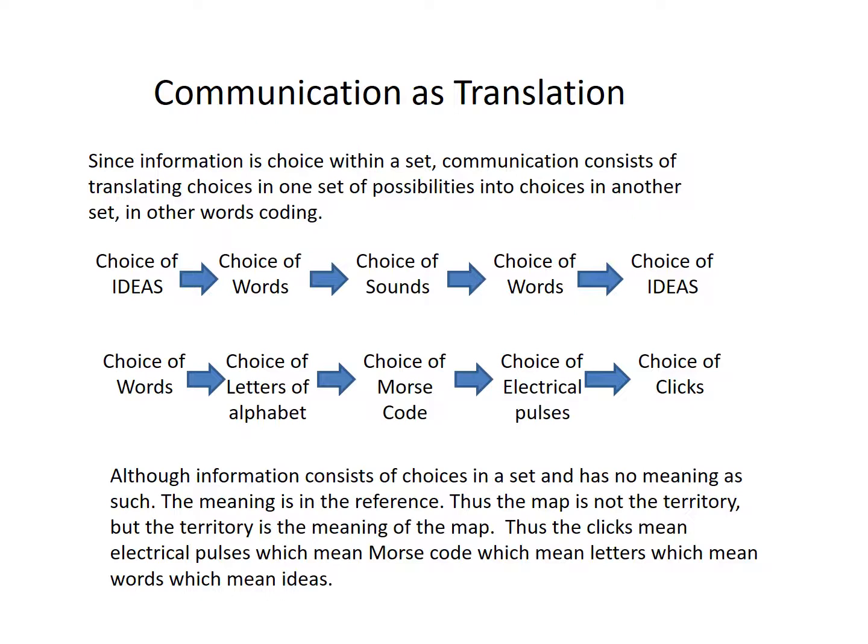Communication as translation. Since information is choice within a set, communication consists of translating choices in one set of possibilities into choices in another set — in other words, coding. For example, you choose your ideas from the ideas in your mind, then translate that into a choice of words from your vocabulary. You then translate those words into sounds, which is what we hear. When someone else hears those sounds, they translate them into words, which is then hopefully translated into a choice of ideas.